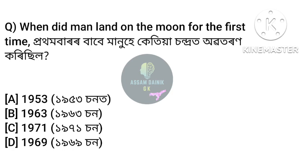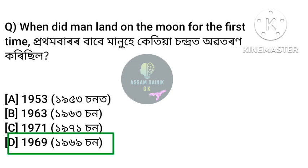Next question: when did men land on the moon for the first time? Answer: Option D, 1969. In 1969, humans first landed on the moon. The 50th anniversary was in 2019.